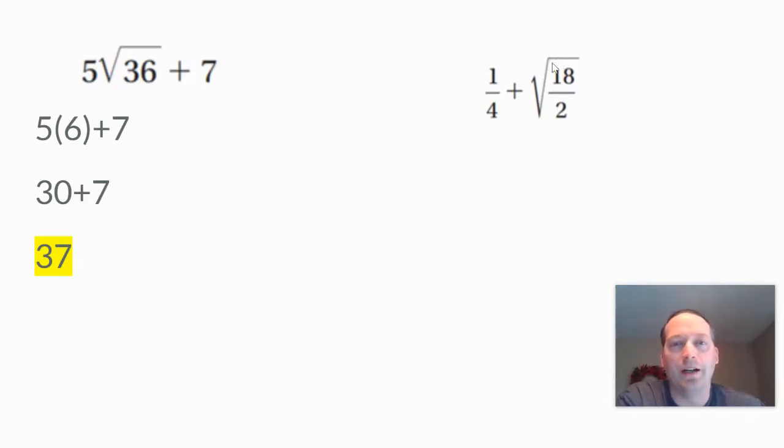Usually when it's a square root of a non-perfect square, we just use a calculator for it. We usually estimate or round to a certain place. This right here is an exact. So what we'll do is instead of taking the square root of each of them, what we're going to do is just do the operation here. So 18 divided by 2 is 9. So this is really 1/4 plus the square root of 9. The square root of 9 is 3. So 1/4 plus 3 is just 3 and 1/4.